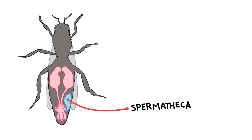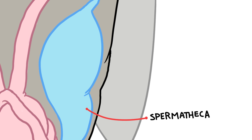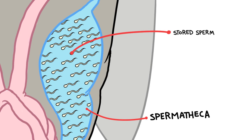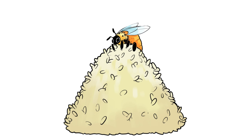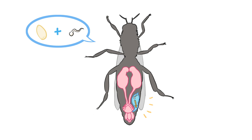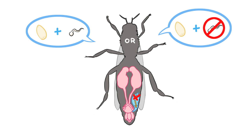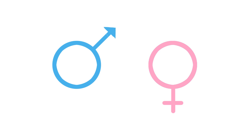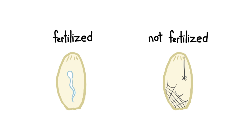Queen bees have a spermatheca on their side where they store thousands of sperm for later use. She will go on to lay about 2,000 eggs in spring and summer. The queen decides whether or not to release sperm from the spermatheca organ, where she releases an oocyte from her own ovaries.